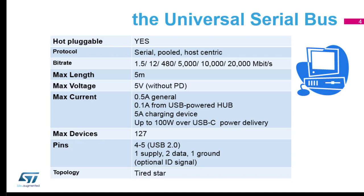Maximum cable length is 5 meters — you can try longer but there's a chance it won't work. The maximum voltage without power delivery is 5 volts, and the current is generally 0.5 amps. When you first plug in, it starts at 0.1 amps and can negotiate to get more power if needed. With USB Type-C power delivery, you can go up to 20 volts and 5 amps — enough to power a laptop.